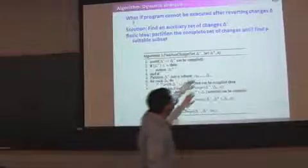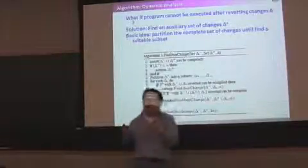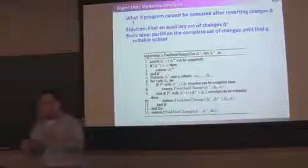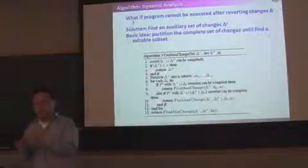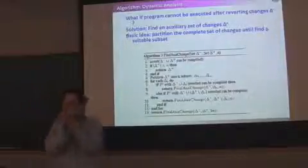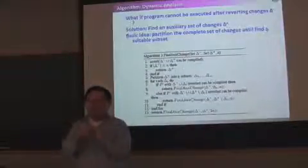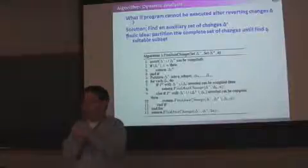Then the trick here is, can we reduce the size of this set of auxiliary changes? So with a very small amount of other changes, I can combine with a change I want to revert, and the programs can be still executed.